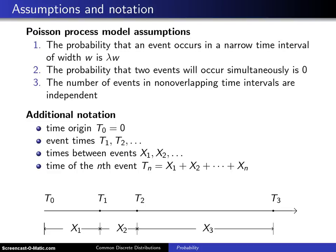So here are some of the assumptions and some of the notation that goes into putting together a Poisson process model. The first assumption is the probability that an event occurs in a narrow time interval of width W is lambda times W.